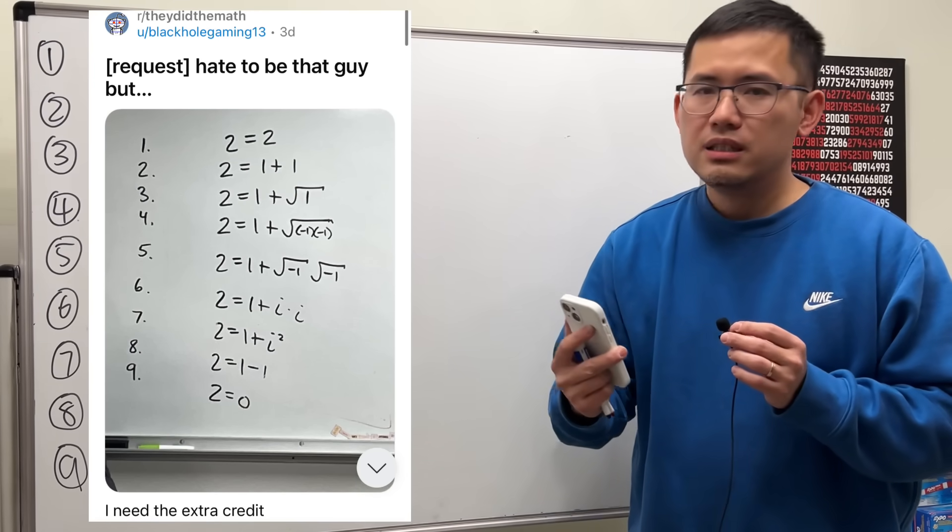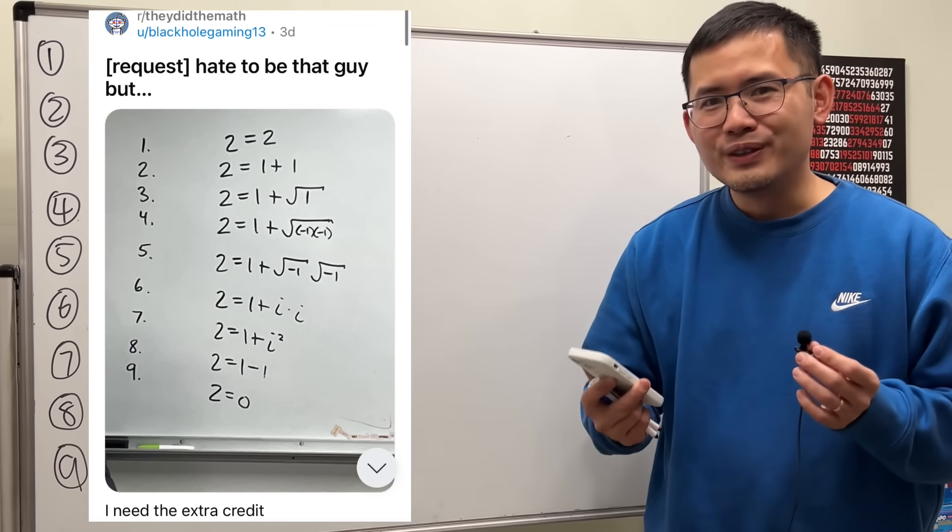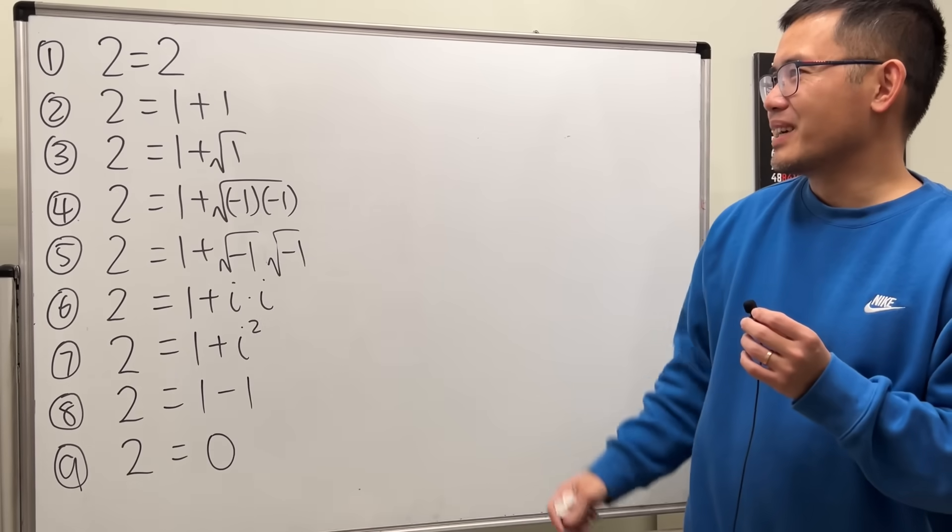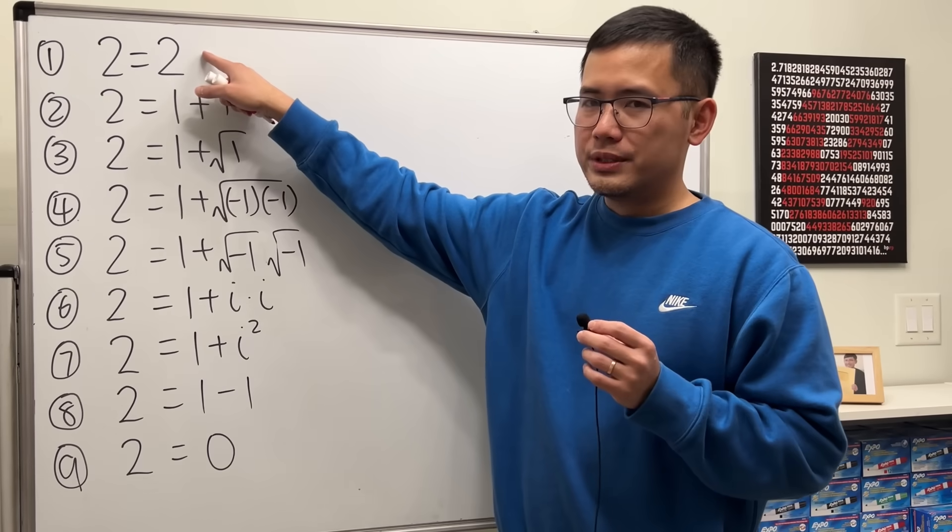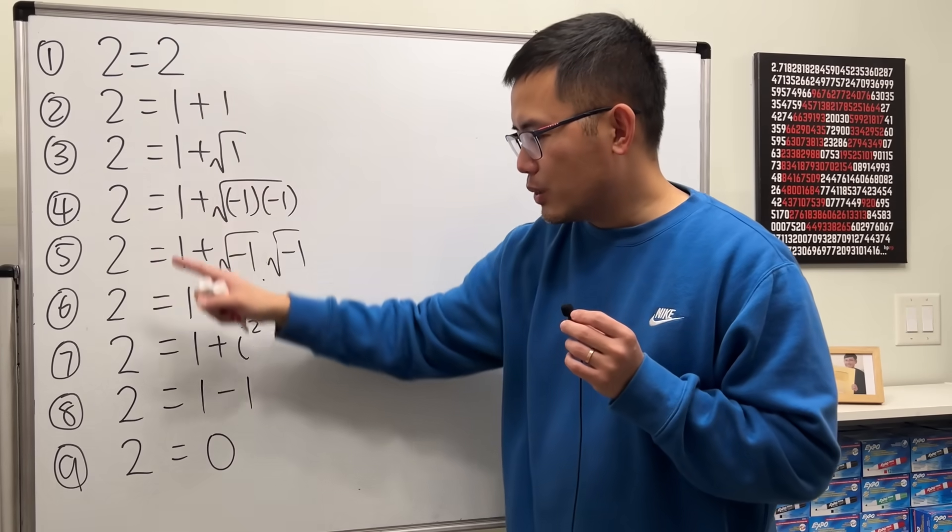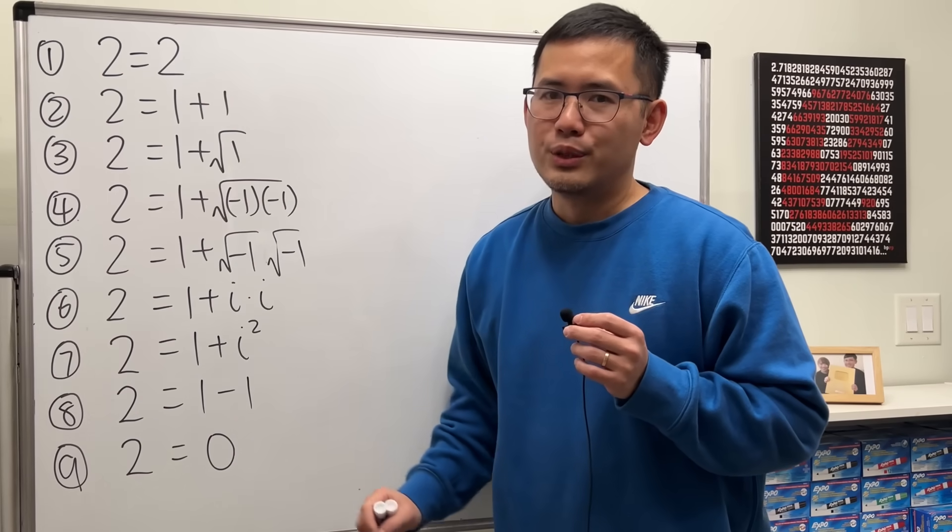I hate to be that guy but I need the extra credit. Well I understand, so let's take a look. We started with 2 is equal to 2, but we somehow end up with 2 is equal to 0.